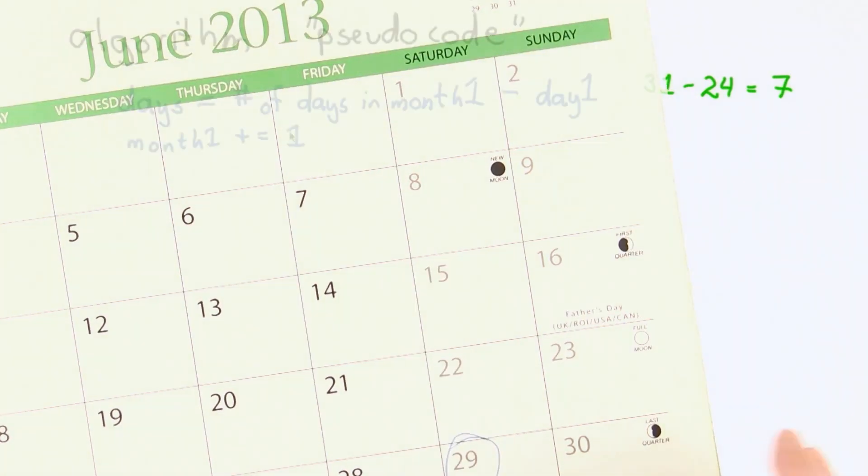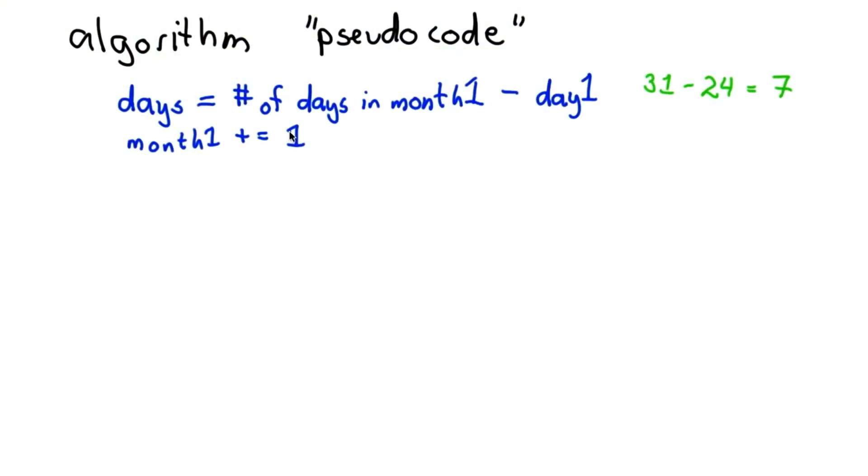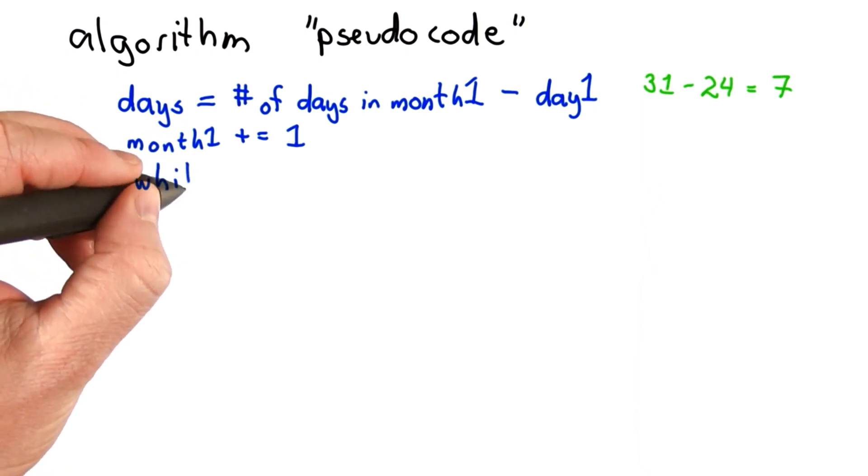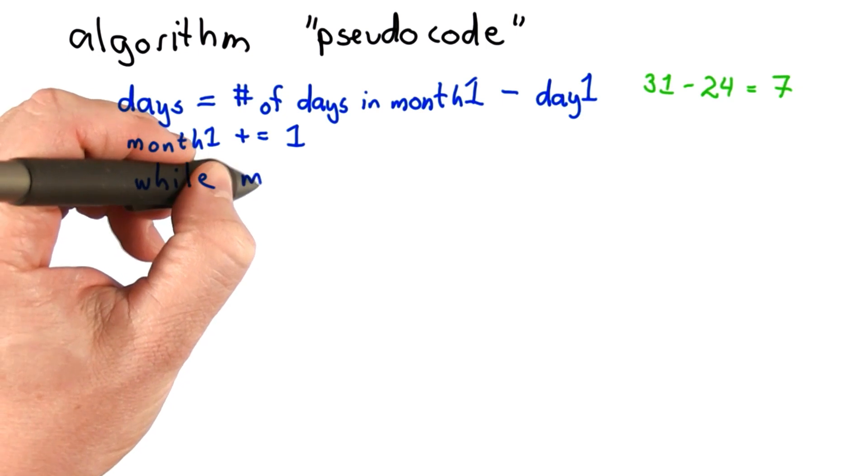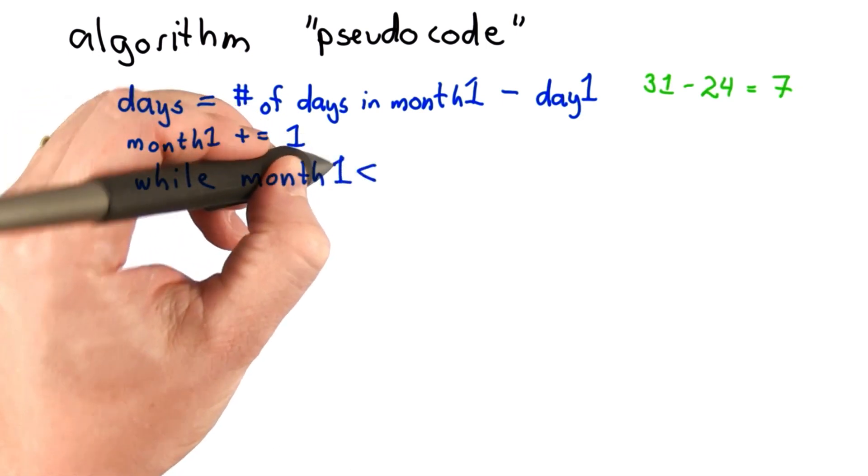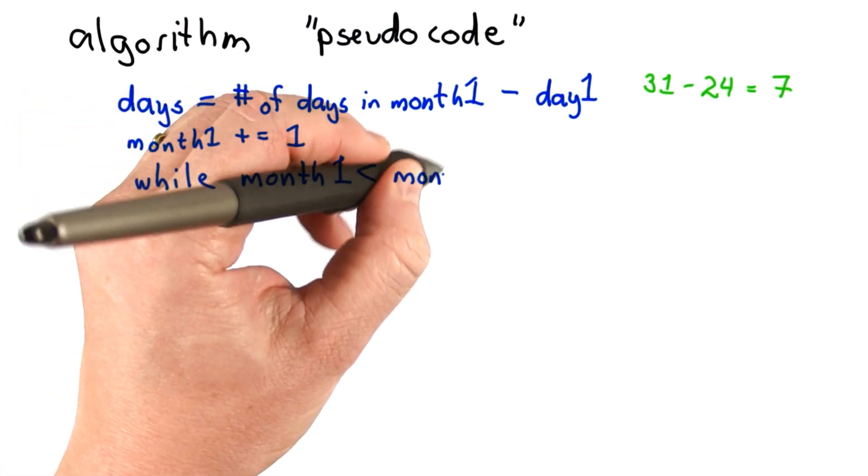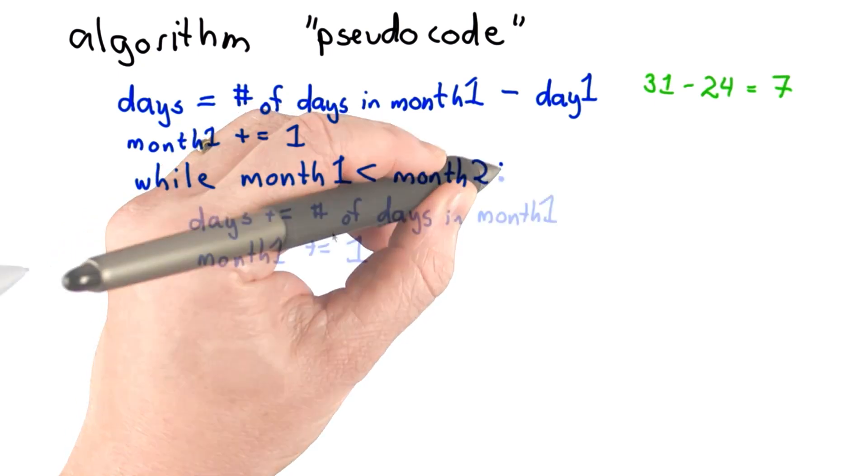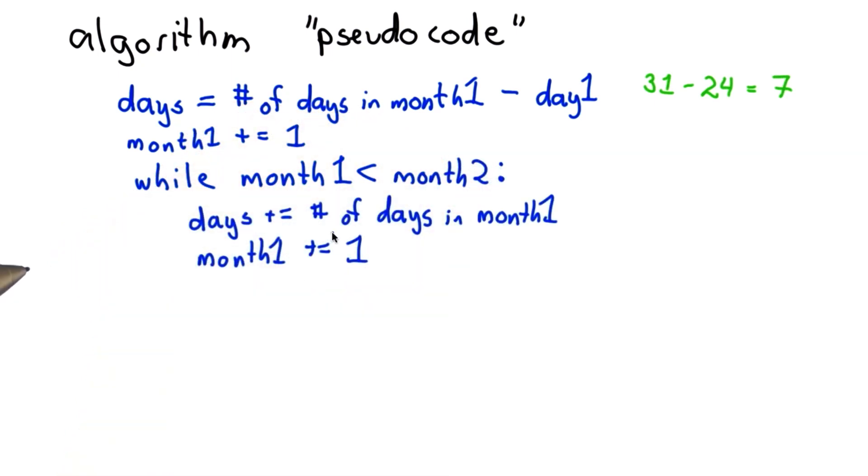That's sort of like a while loop. We're doing something over and over again until we get to the stopping condition. We can write that as pseudocode. We're going to keep going while the current month is less than the target month. We're going to add the number of days in the current month and increase the current month by 1.